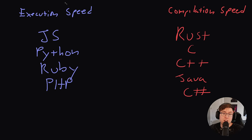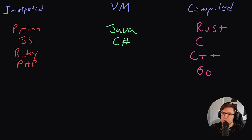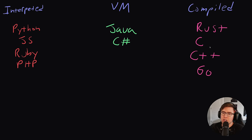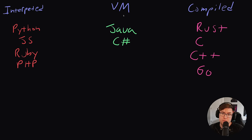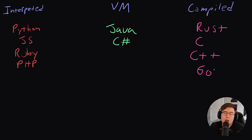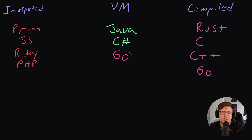Go does not necessarily run faster than all compiled languages, but it does beat them handily when it comes to compiling. Go is a natively compiled language — a language that compiles directly to machine code like Rust, C, and C++ — but its execution speed is actually more similar to Java and C#, when it comes to runtime speed. The primary reason for that is the Go runtime: there's basically a chunk of code included in every Go program that manages memory, and that tends to slow down execution speed a little bit.